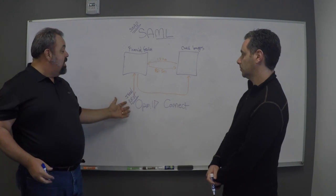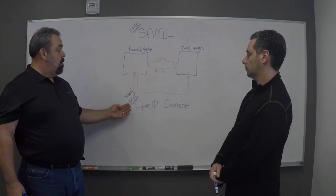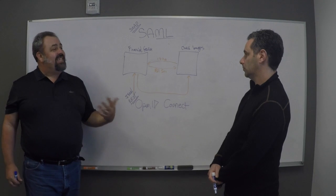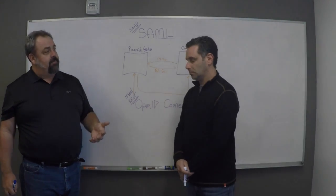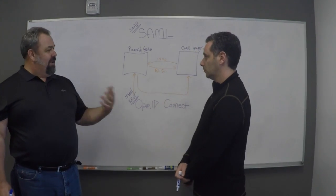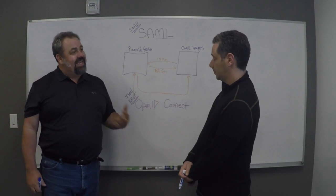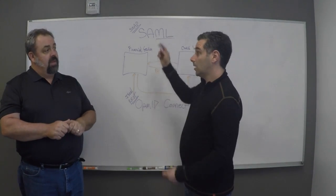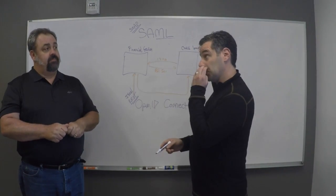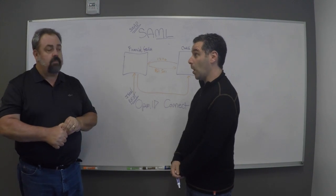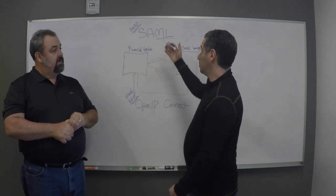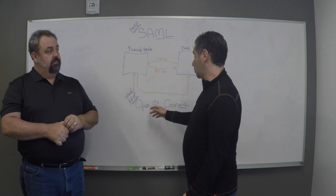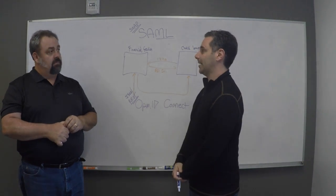The nice thing about OpenID Connect is that because REST is so lightweight, it makes it much easier and simpler to implement — especially in the social space. It's easy to get things up and running. So what you'd say is: SAML conquered some really challenging use cases and conquered them well, but people demanded a lighter-weight way of doing it, which is why OpenID Connect came about.